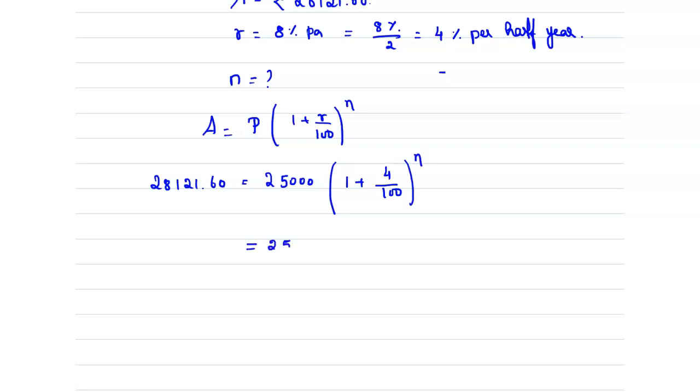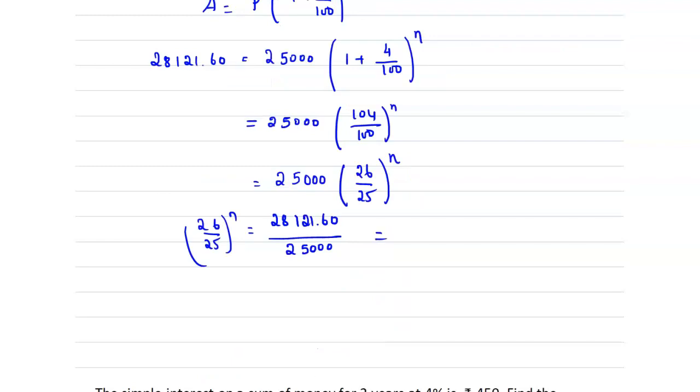This equals 25,000 multiplied by (104/100) to the power n, which equals 25,000 multiplied by (26/25) to the power n. From this we can say (26/25) to the power n equals 28,121.60 divided by 25,000, which equals 1.1249.